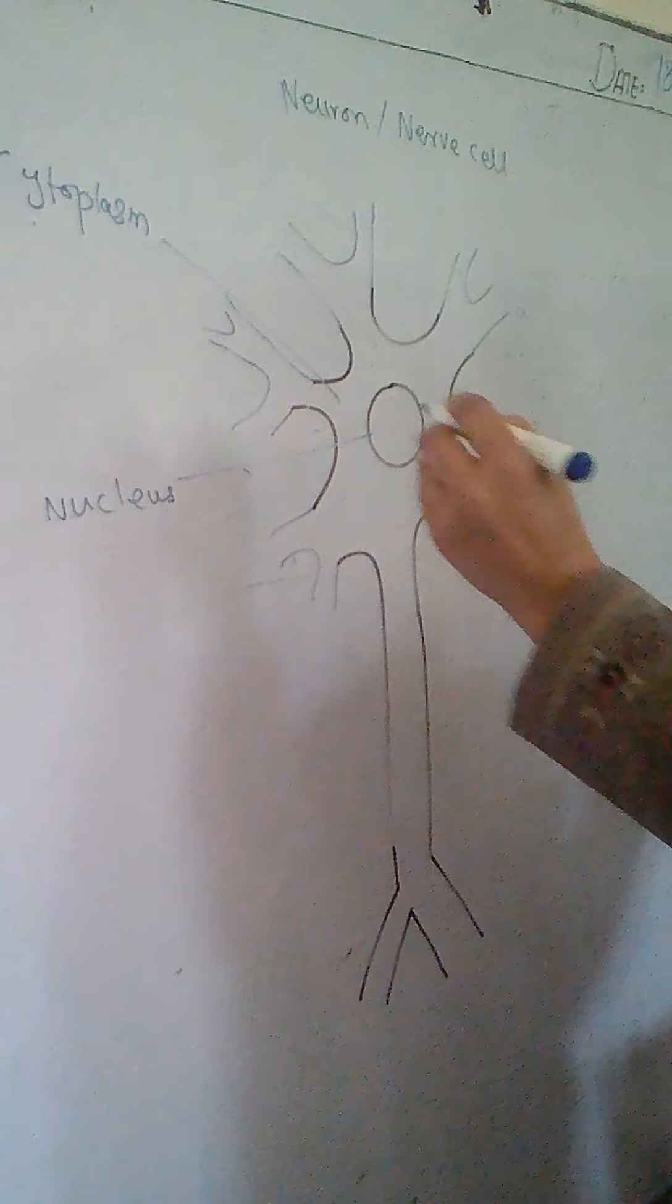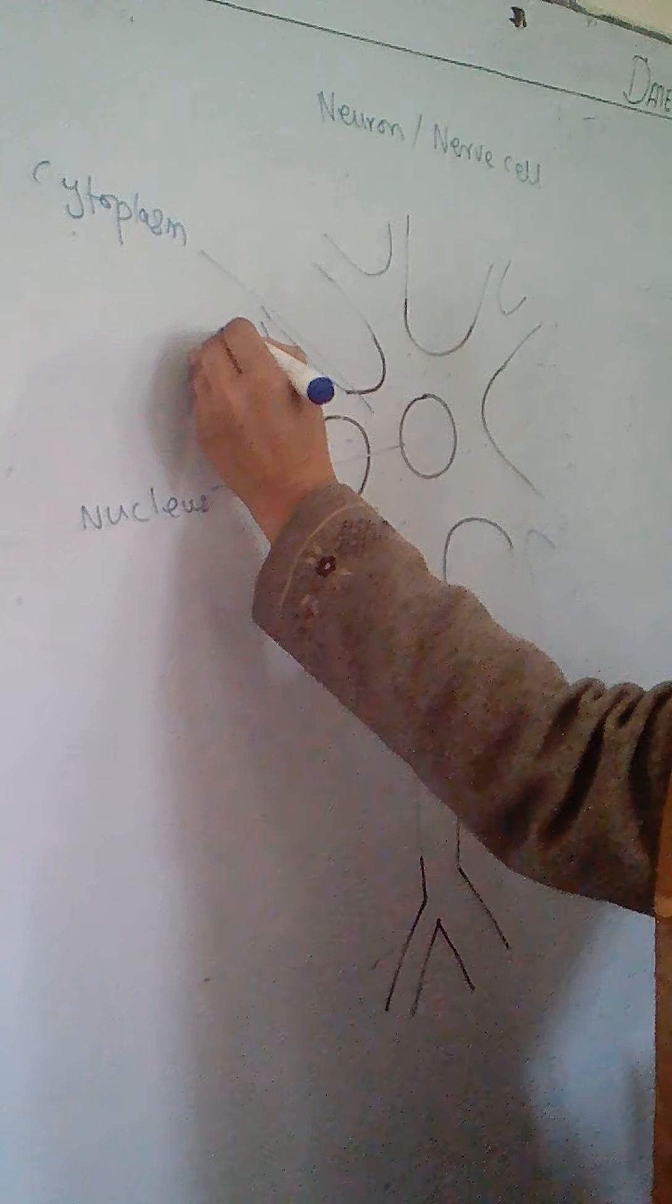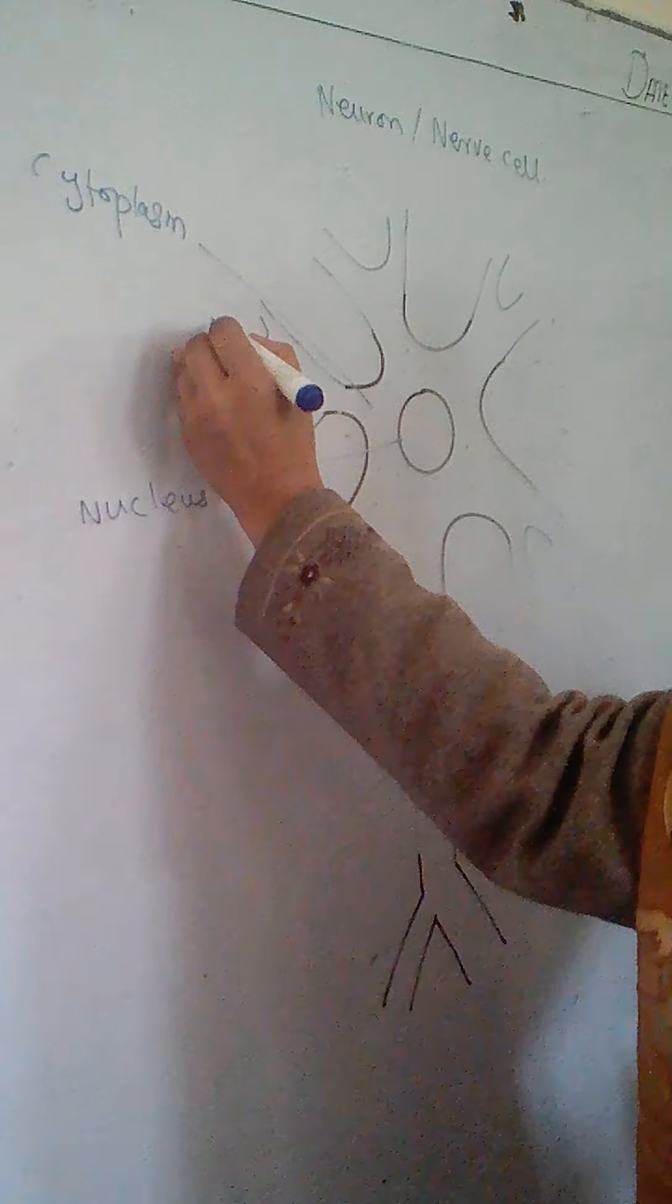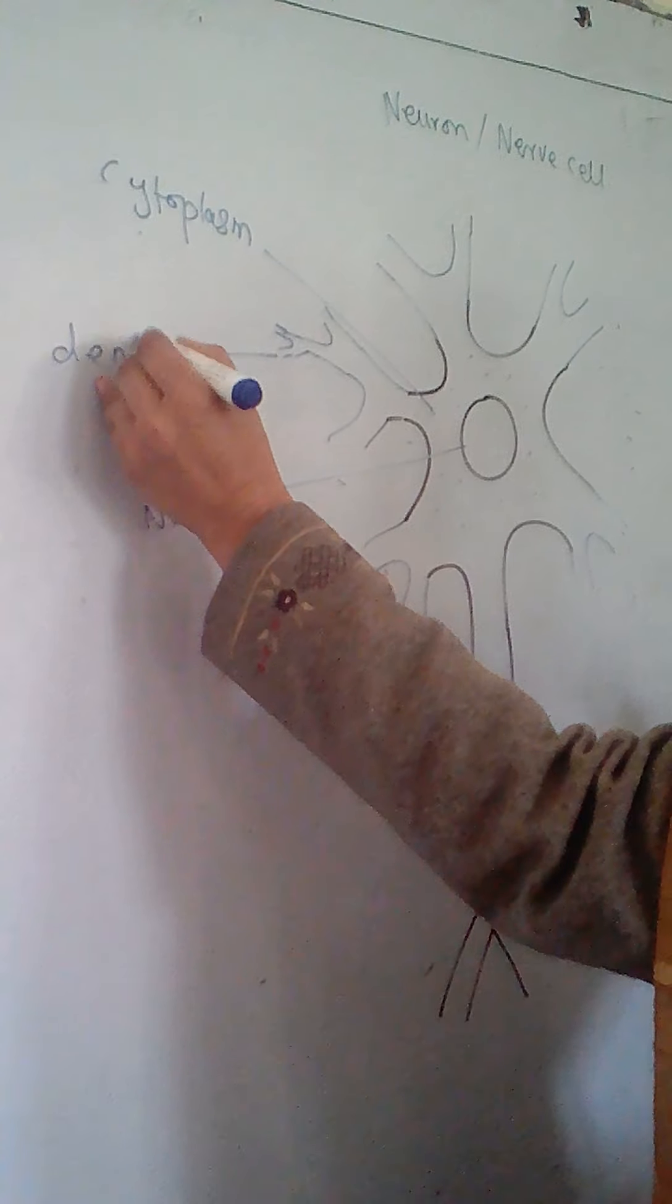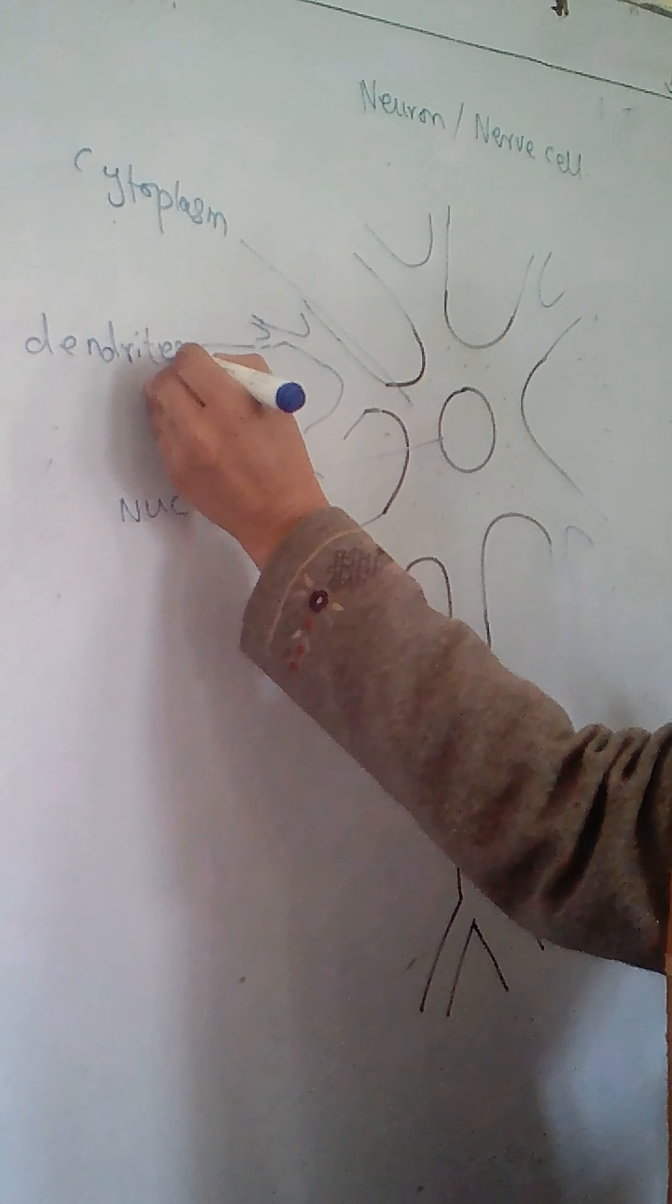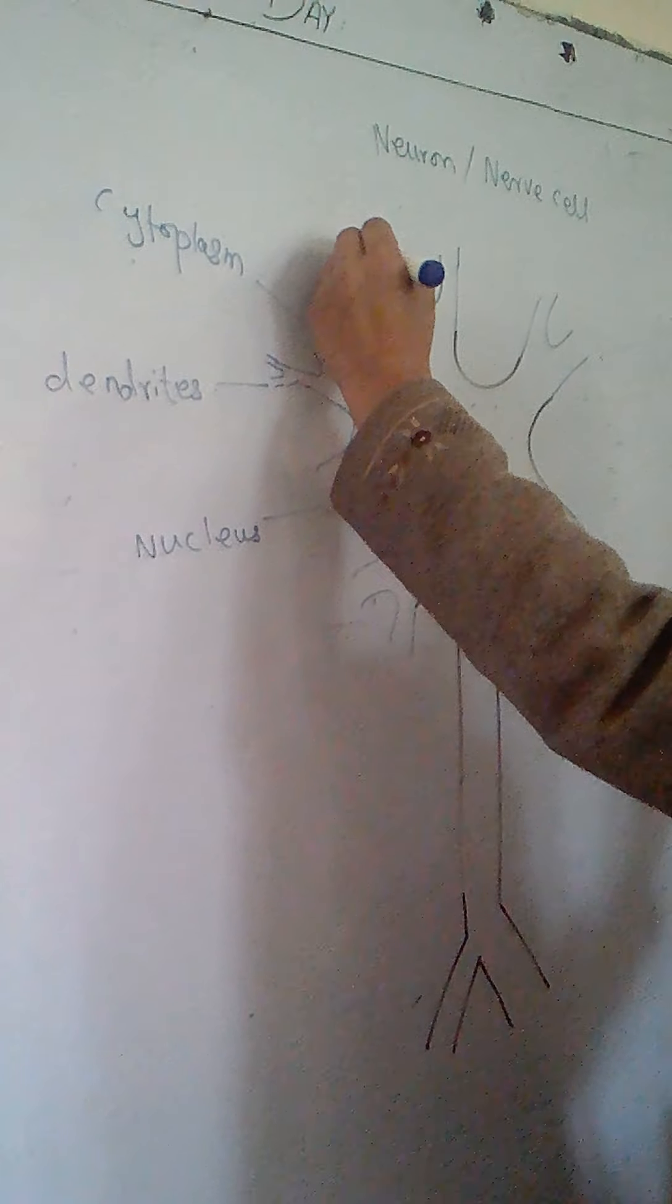They are very important and very sensitive parts called dendrites. Dendrites are very sensitive and they receive messages. These are the very sensitive part of the neuron.